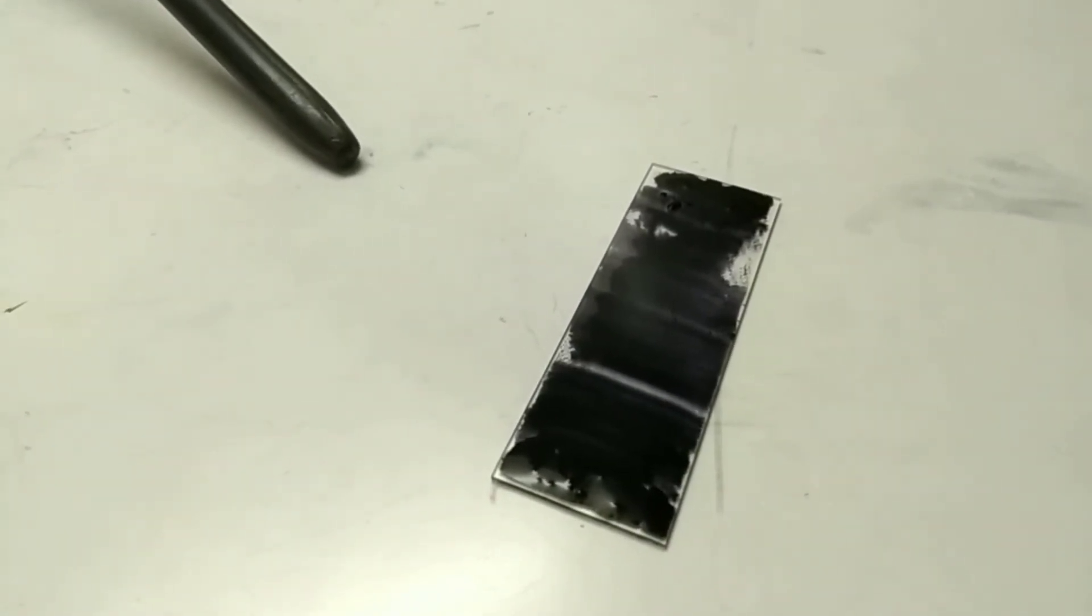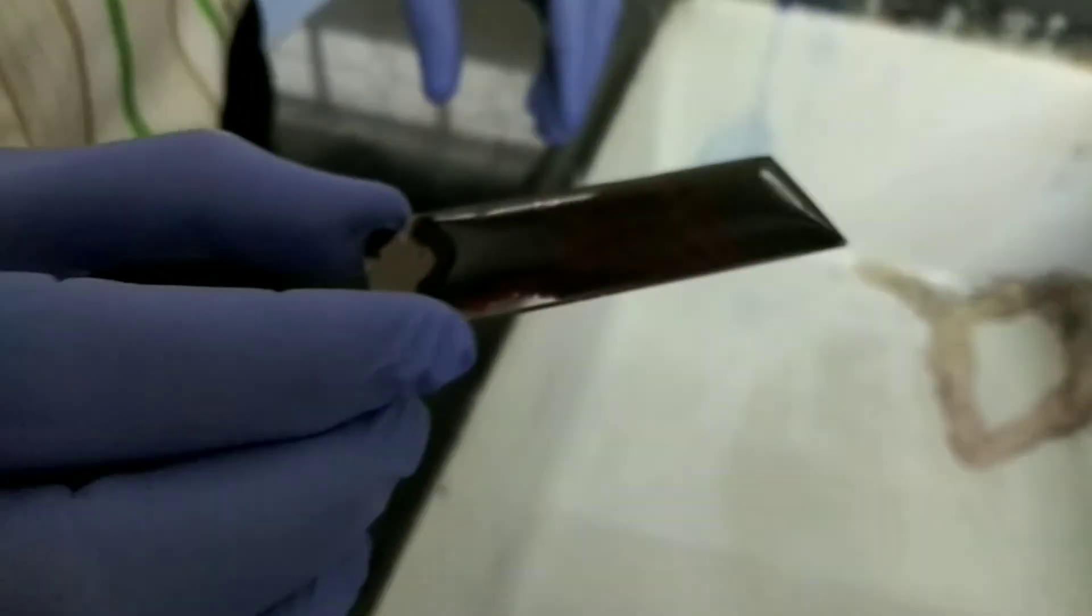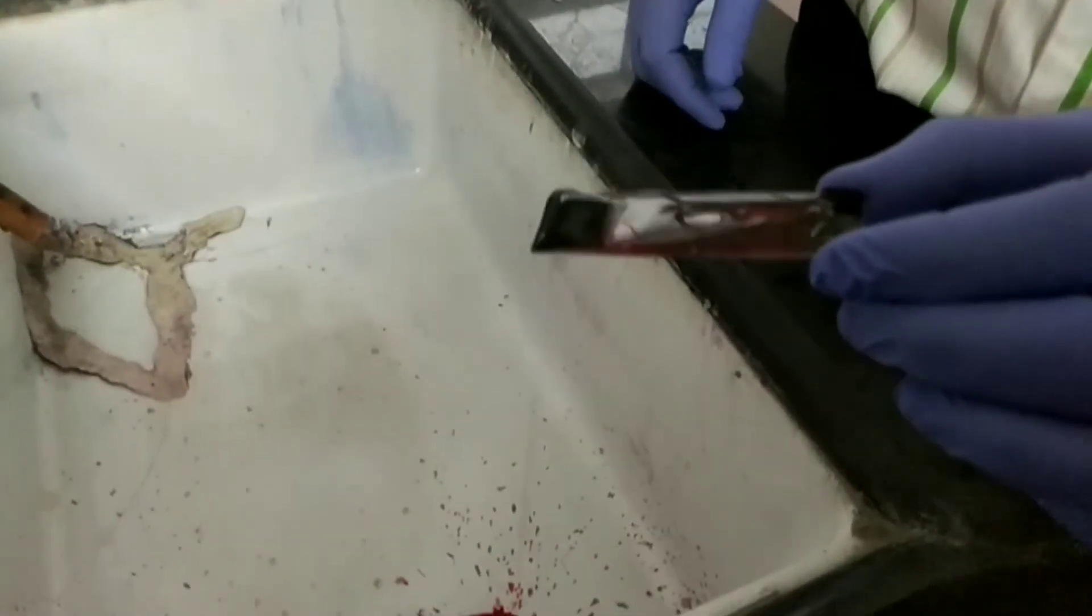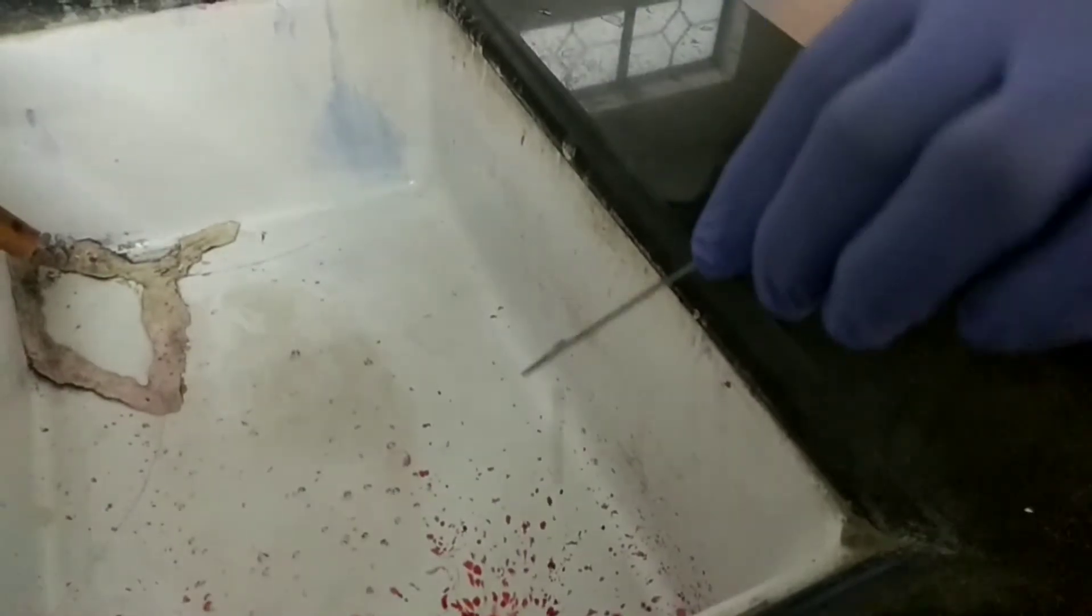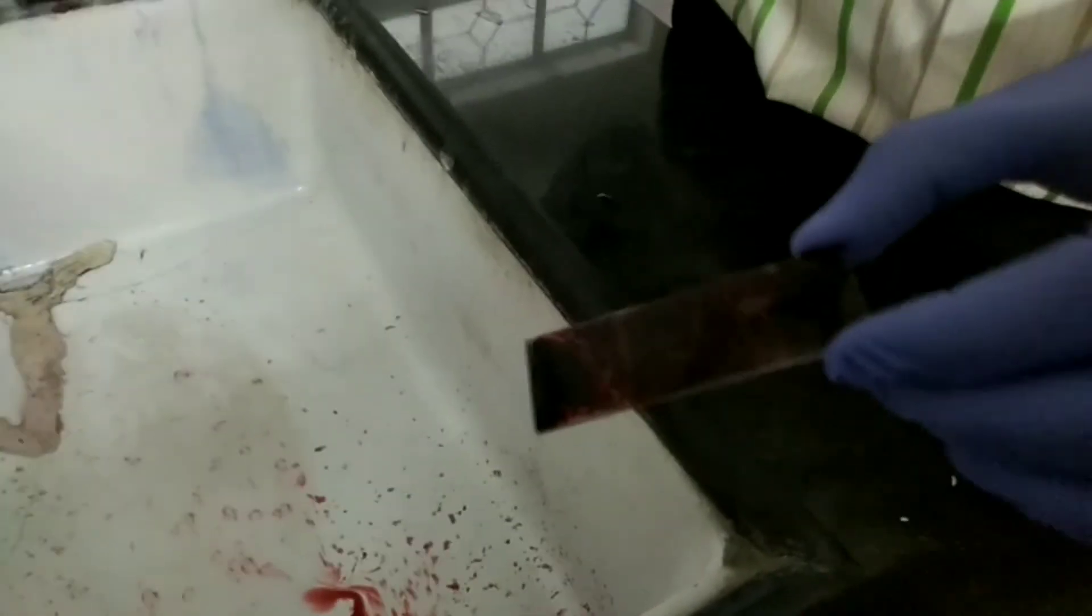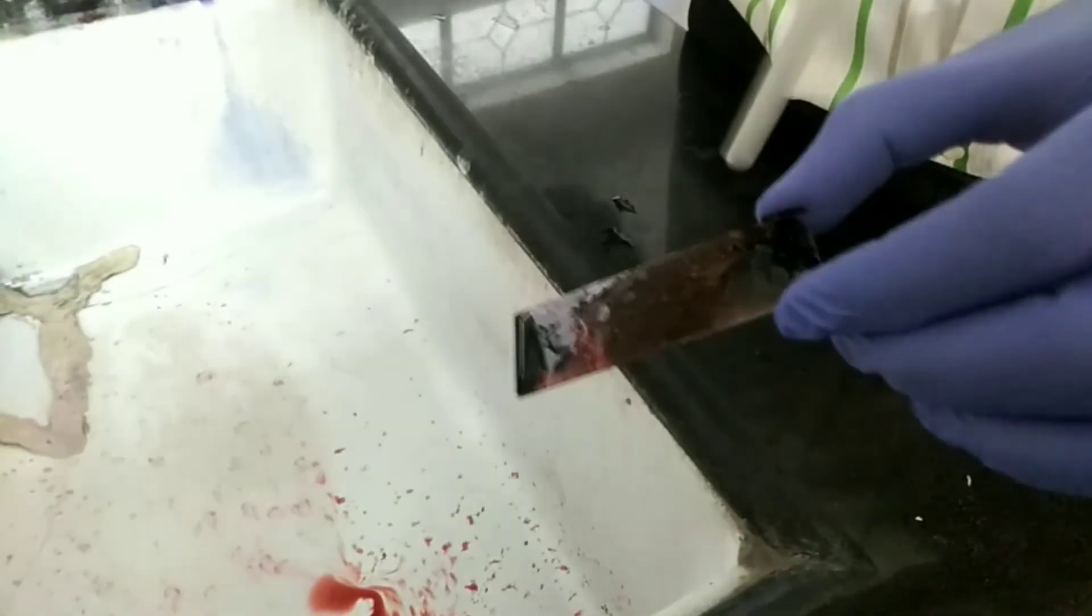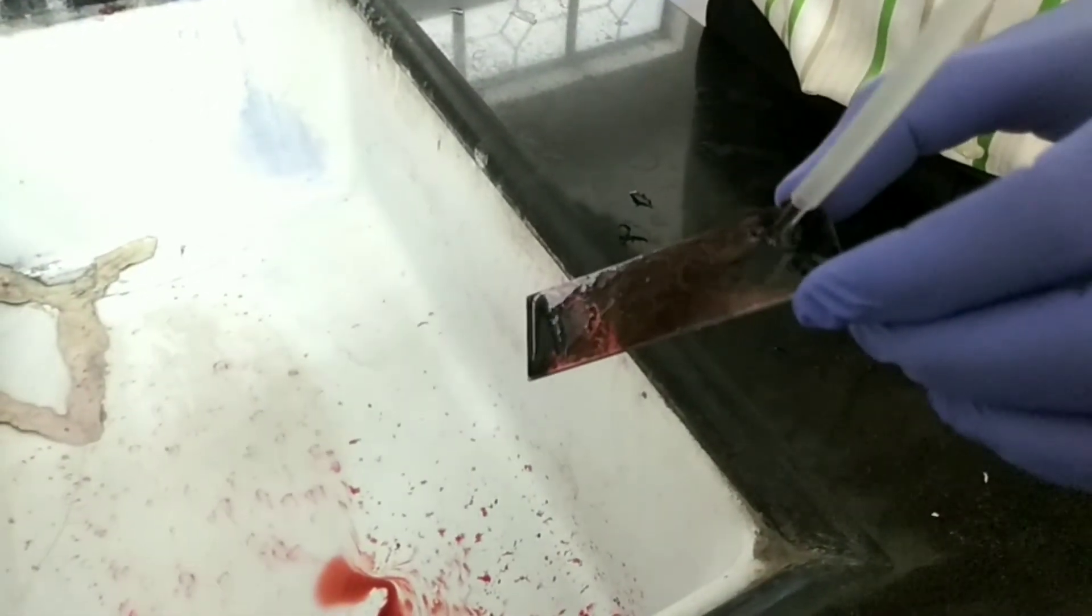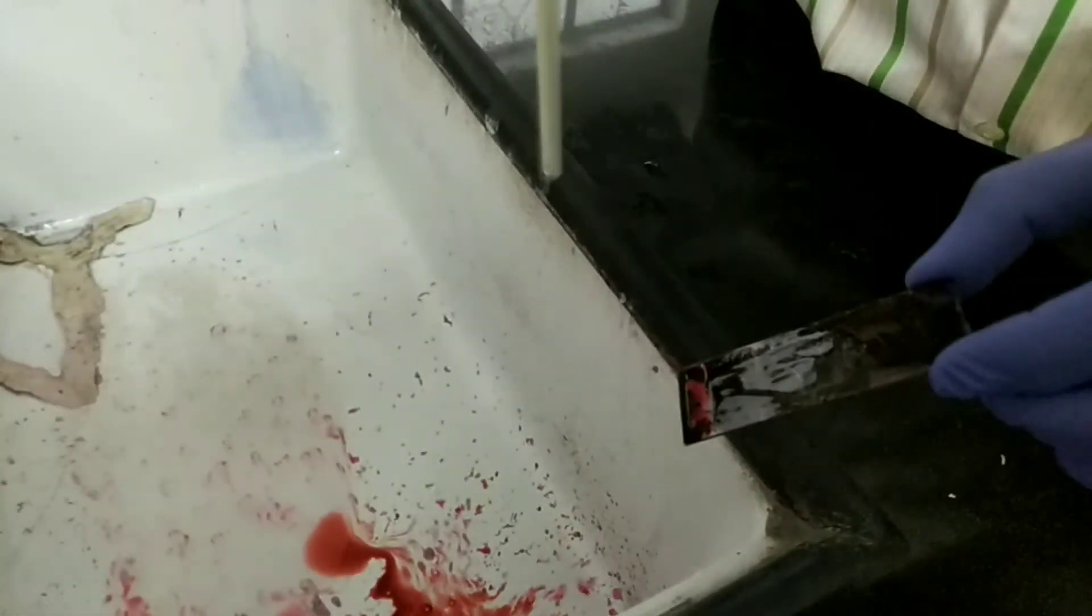After air drying, counter stain the film with safranin for 30 seconds. After 30 seconds, drain out all the rest of the safranin and wash the slide gently with water. Remember that you have to wash the slide very gently because harshly washing the slide with water will remove all the capsule and you won't be able to visualize them.